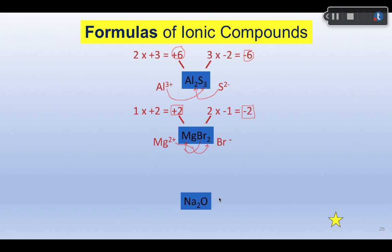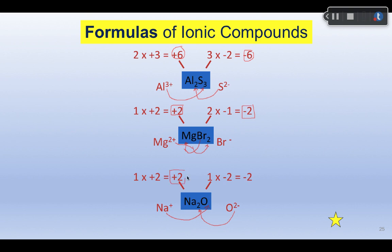With sodium and oxygen together in a compound, sodium is a group 1A element with a plus 1 charge. Oxygen is a group 6A or 16 element, so 8 minus the group number gives a minus 2 charge, just like sulfur. The charge on sodium gives you the subscript on oxygen, and the charge on oxygen gives you the subscript on sodium. We use simplest whole number ratios, so you have 2 sodium with plus 2 total and 1 oxygen with minus 2 — combined, the compound is electrically neutral.